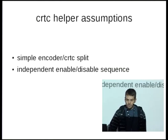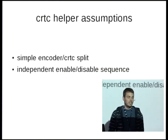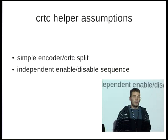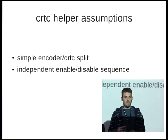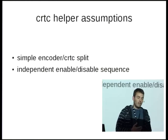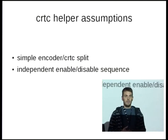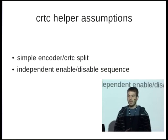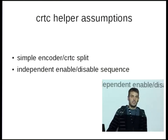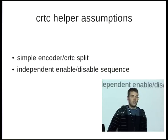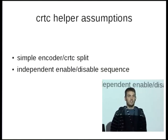Let's first look at the CRTC helpers and the basic assumptions they make. The CRTC helper code has a very simple split between the encoder block and the CRTC block. It assumes there's just a dumb pixel pipe in between, and as long as the CRTC is enabled you can enable and disable the encoder — that's the only constraint it imposes.